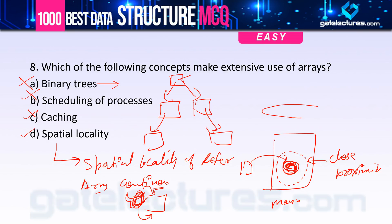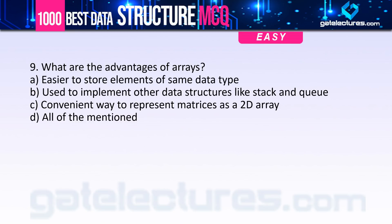Question 9 asks: what are the advantages of arrays? Option A: easier to store elements of the same data type — correct. Option B: used to implement other data structures like stacks and queues — correct. Option C: convenient way to represent matrices using 2D arrays — also correct. Therefore the answer is option D: all of the above.